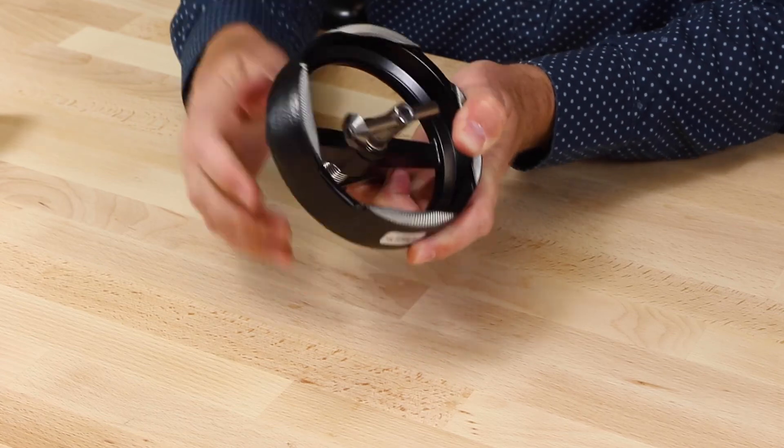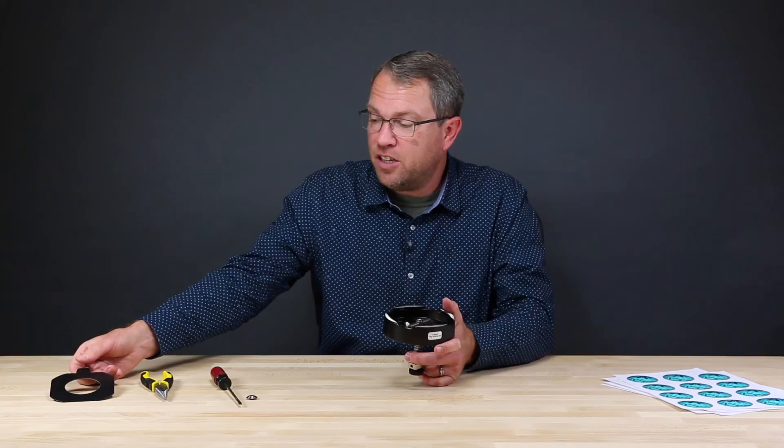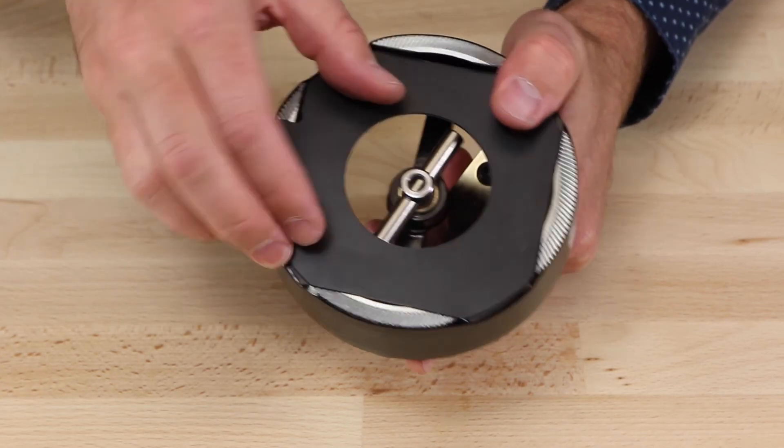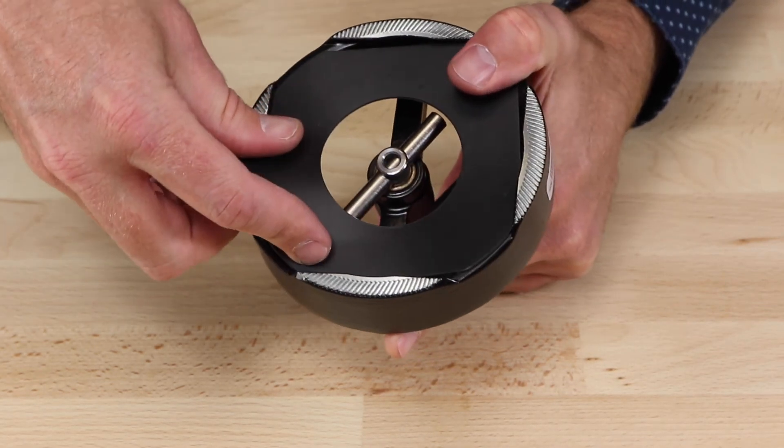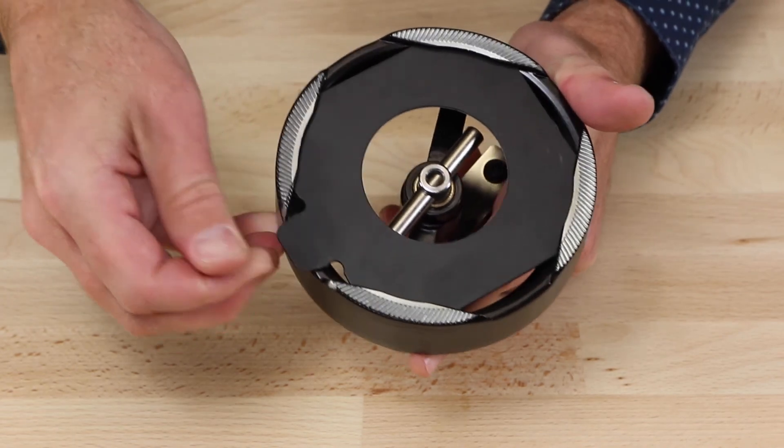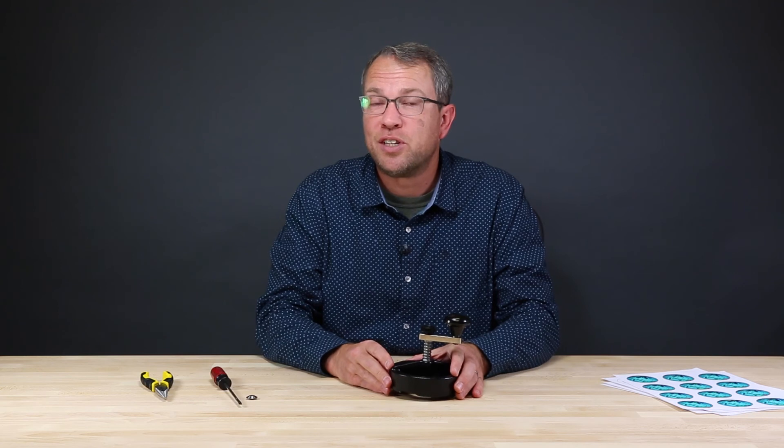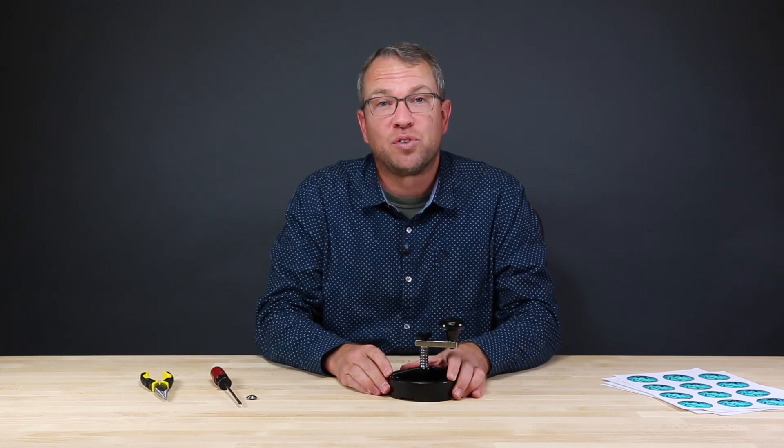I am finished replacing that blade. Now all I need to do is replace the centering template, so I'll put that into position and apply downward pressure and rotate until it is locked in place. There you have it, a very simple task to replace the cutting blade on that adjustable circle cutter.